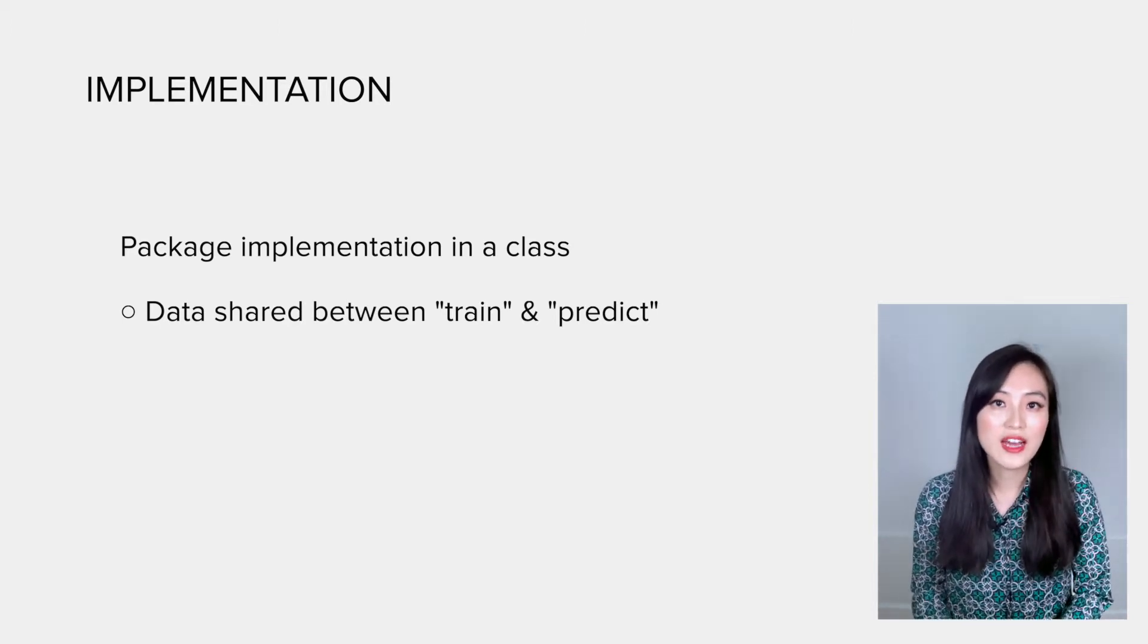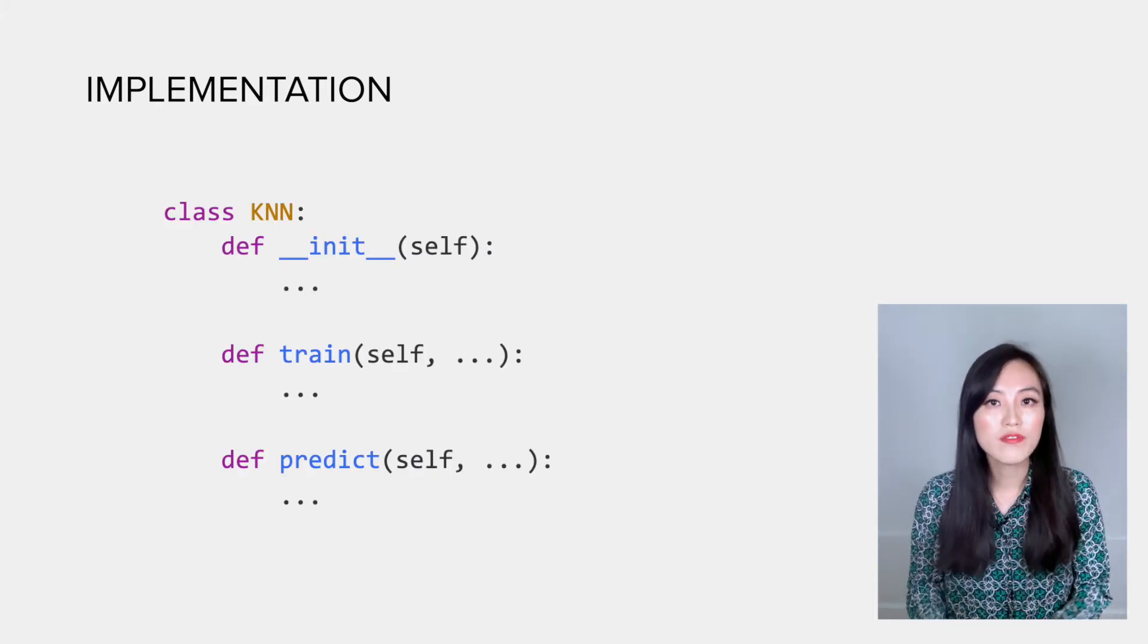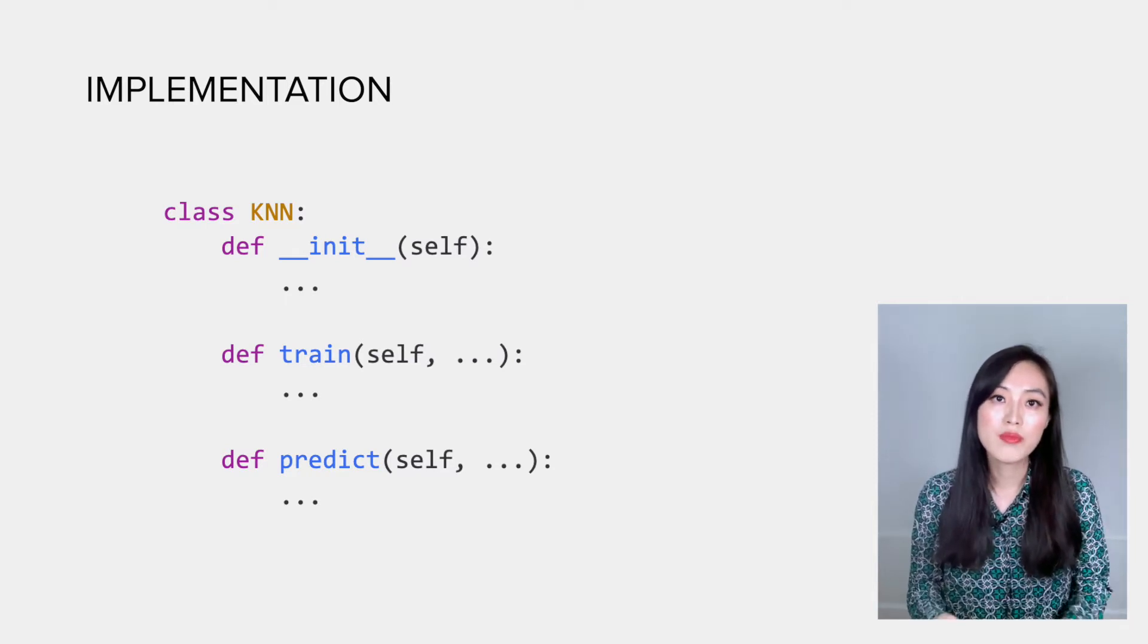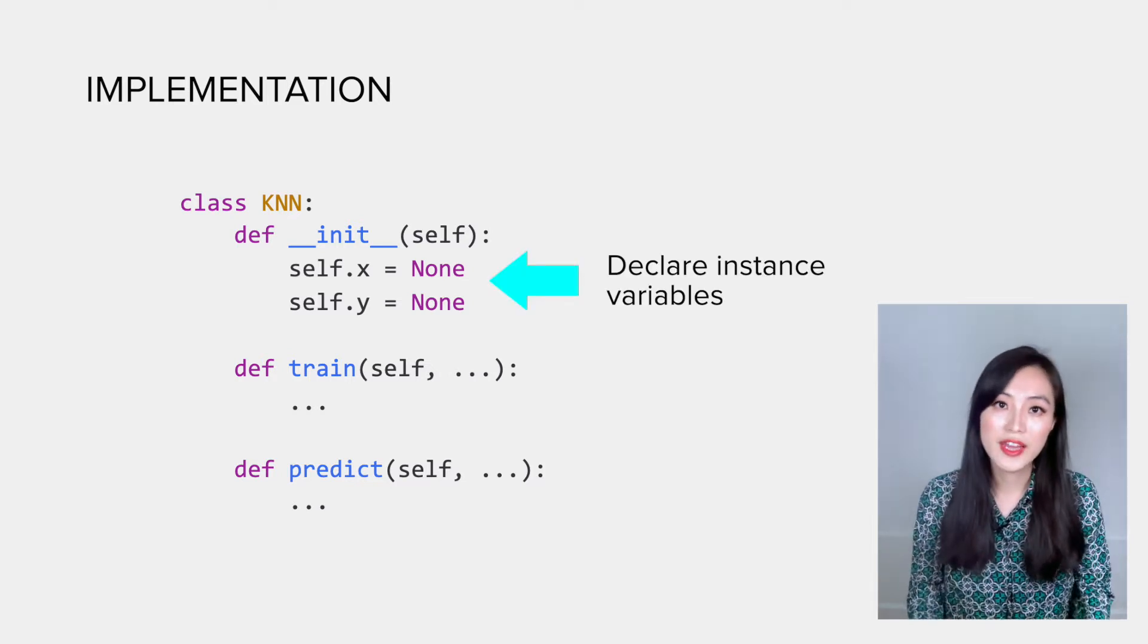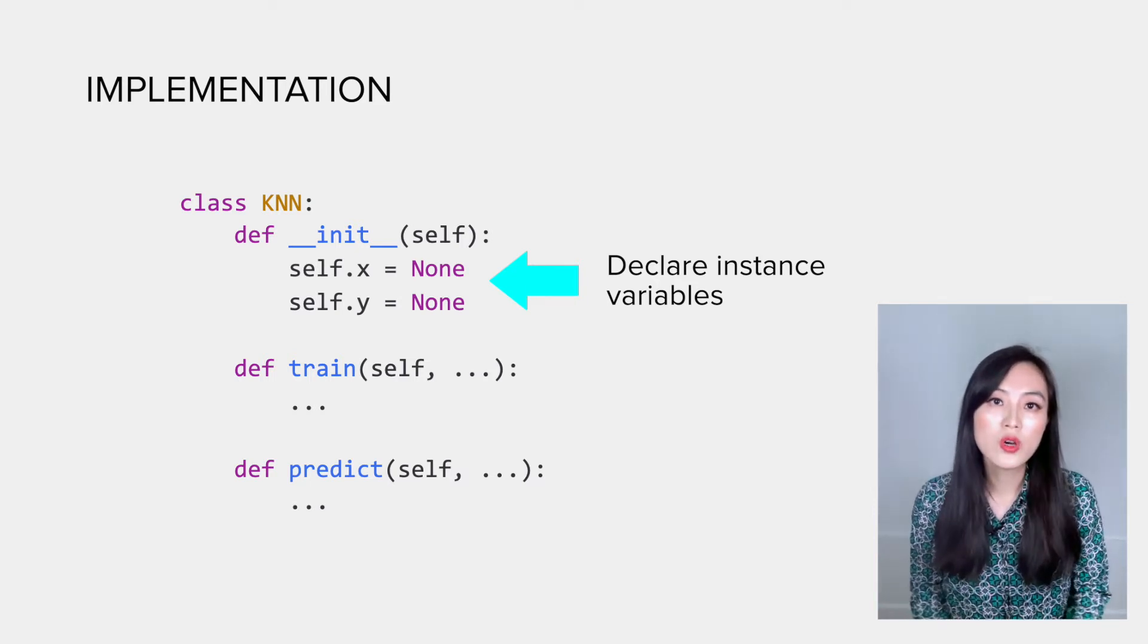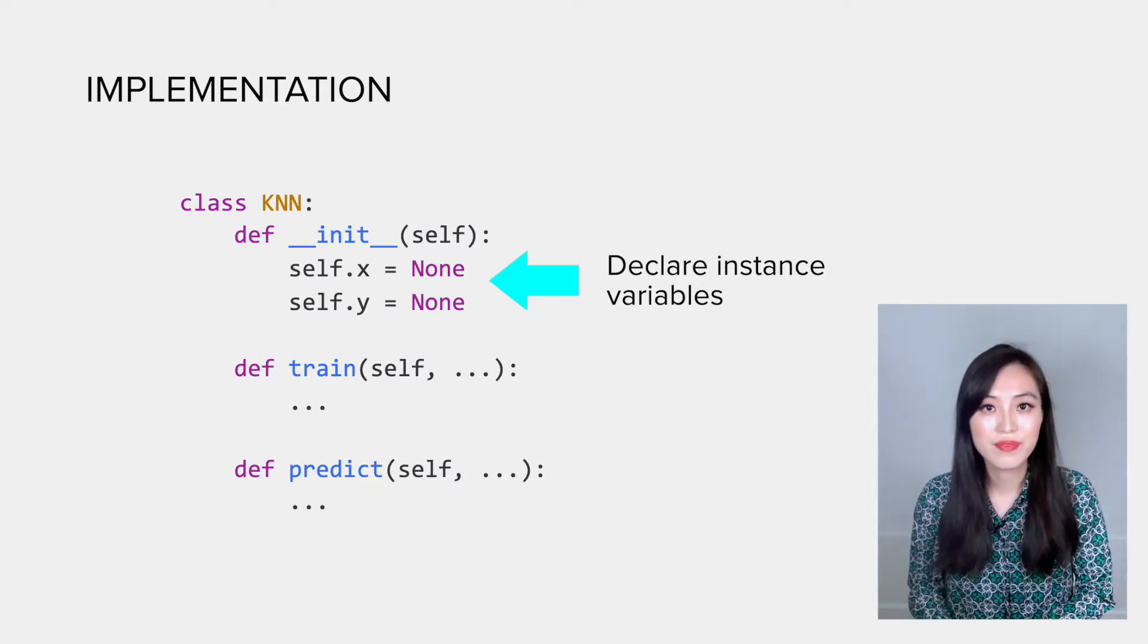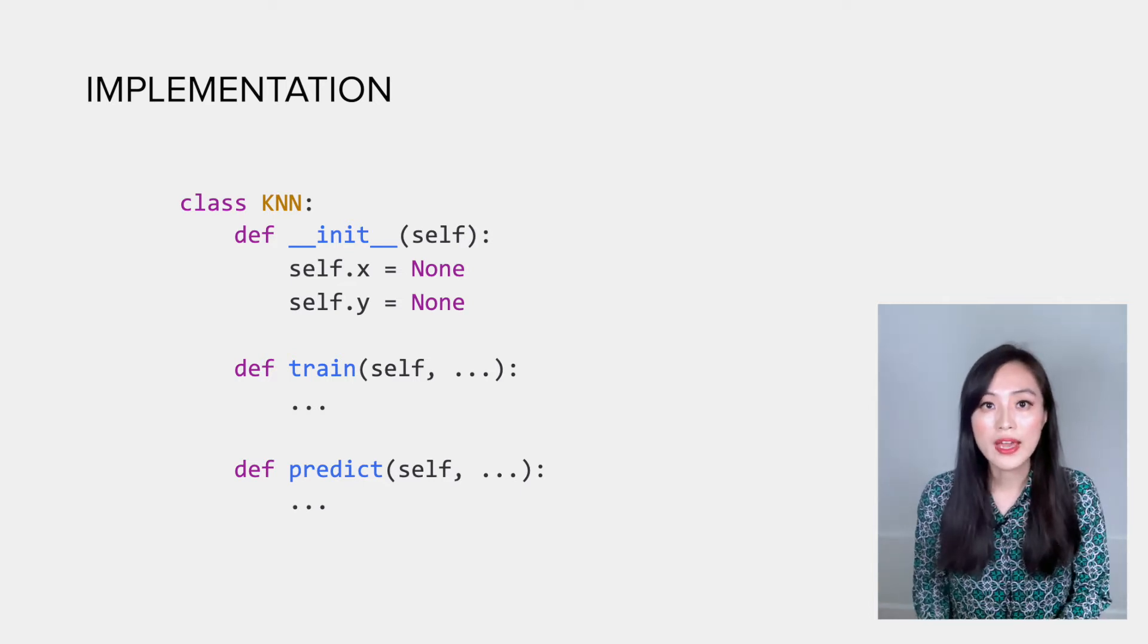In this class object we only have three functions: the init function, the train function, and the predict function. In Python, it's a good coding practice to declare all instance variables in the init function before using them or updating the values. Other people reading your code could easily understand what variables will be used and shared in that class. So we declare self.x and self.y, representing the training data and labels respectively, and assign None to them in the init function.